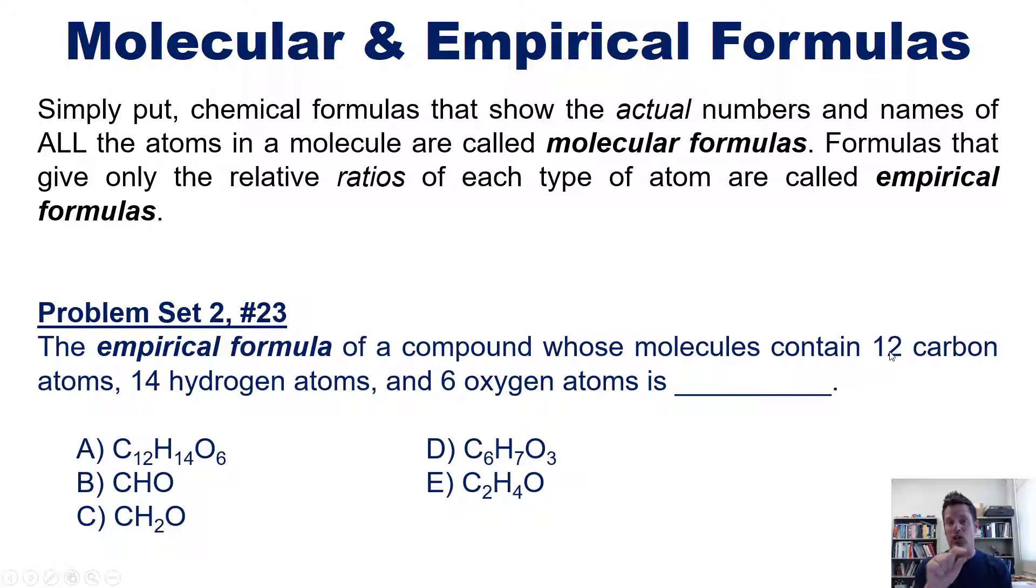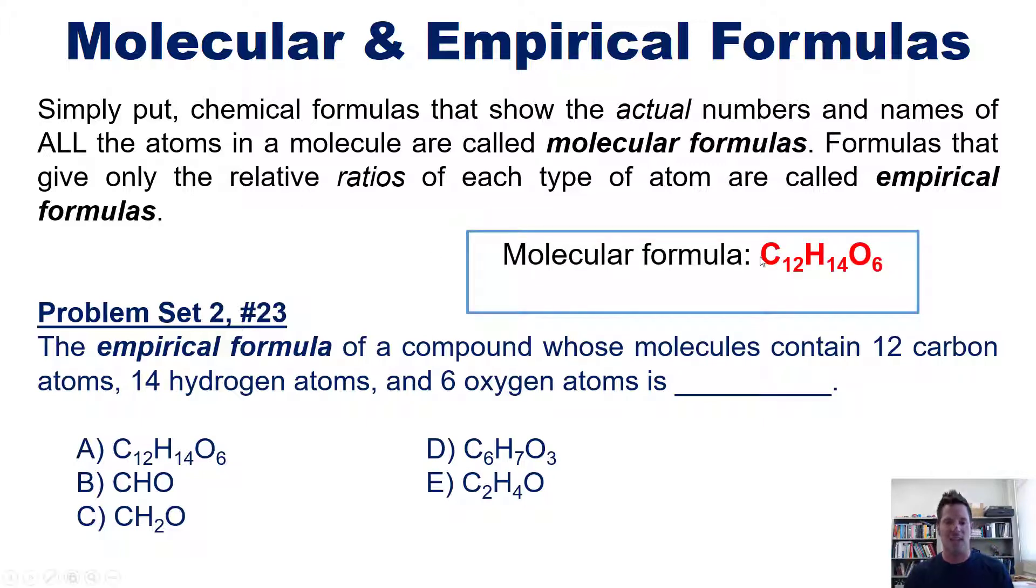For example, next to carbon, we'll put a little 12. To the right of the hydrogen, we'll put a little 14. And to the right of the oxygen, we'll put a little 6. So we're right here. Now this is a molecular formula. In other words, it tells us that the molecules for this compound actually do contain 12 carbon atoms, 14 hydrogens, and 6 oxygens per molecule.